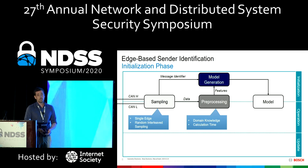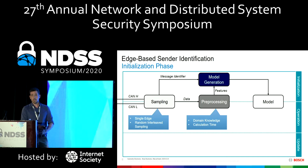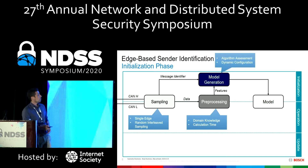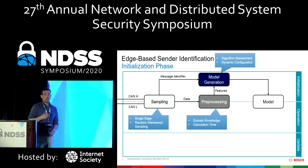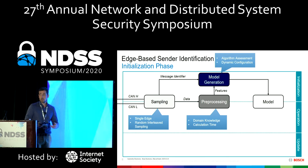In preprocessing, you extract features — for example, statistical features, or features we added which describe the way you as a human look at these signals and distinguish them, such as differences in the signal or ratios of some points. We only used features which do not require too much computation time. Then we go to model generation: we have the features and the message identifier, and we generate one model for each ECU. We assessed different machine learning algorithms and added some dynamic configuration compared to previous approaches, which lowers the configuration overhead.